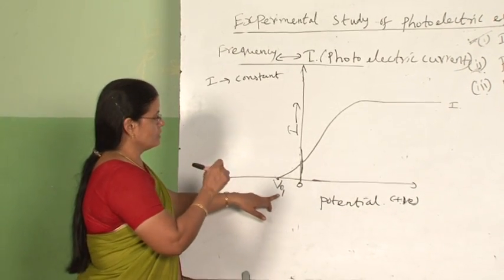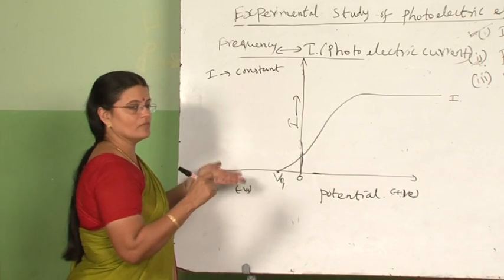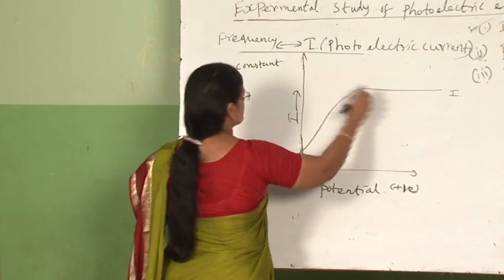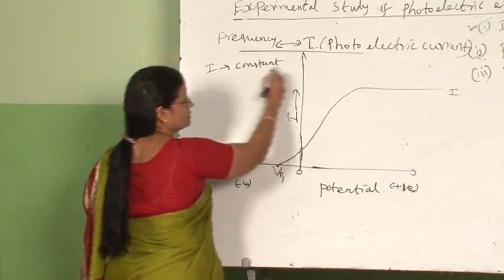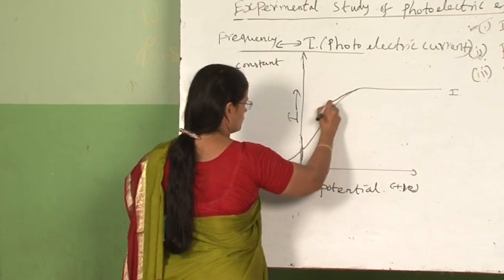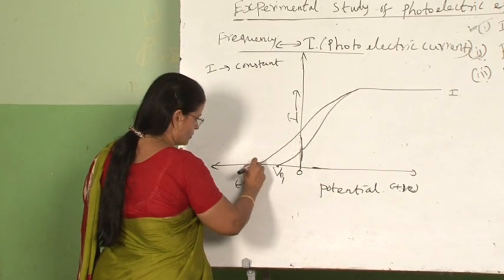Now, if you repeat the same experiment with different frequencies by changing the frequency but keeping I constant, then since we're keeping I constant, the saturation current will be the same, but we are changing the frequency, so the stopping potential will vary.